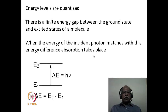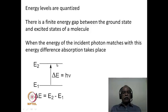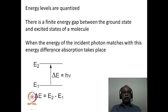According to quantum mechanics, energy levels are quantized — electronic, vibrational, and rotational energy levels are all quantized. The energy gap between the ground state and the excited state is a finite one. When the energy of the incident photon matches the energy difference between the ground state and excited state, absorption of the light takes place. If E₁ is the ground state energy and E₂ is the excited state energy, the difference ΔE = hν. When the electromagnetic radiation frequency corresponds to ΔE, absorption occurs; if a different frequency does not match this criterion, absorption will not take place.